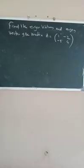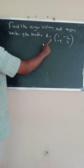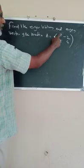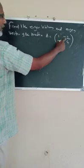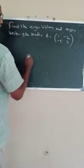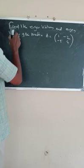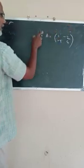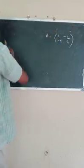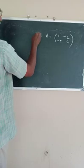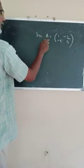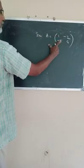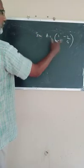Problem: find the eigenvalues and eigenvectors of the matrix A equal to [[1, -2], [-5, 4]].